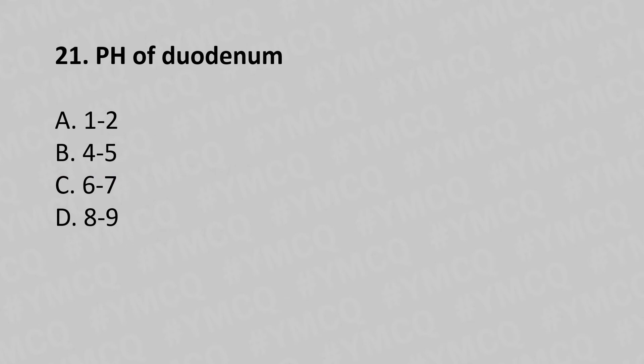Now let's move to question number 21. pH of duodenum: Option A: 1 to 2. Option B: 4 to 5. Option C: 6 to 7. Option D: 8 to 9. And the answer is Option C: 6 to 7.